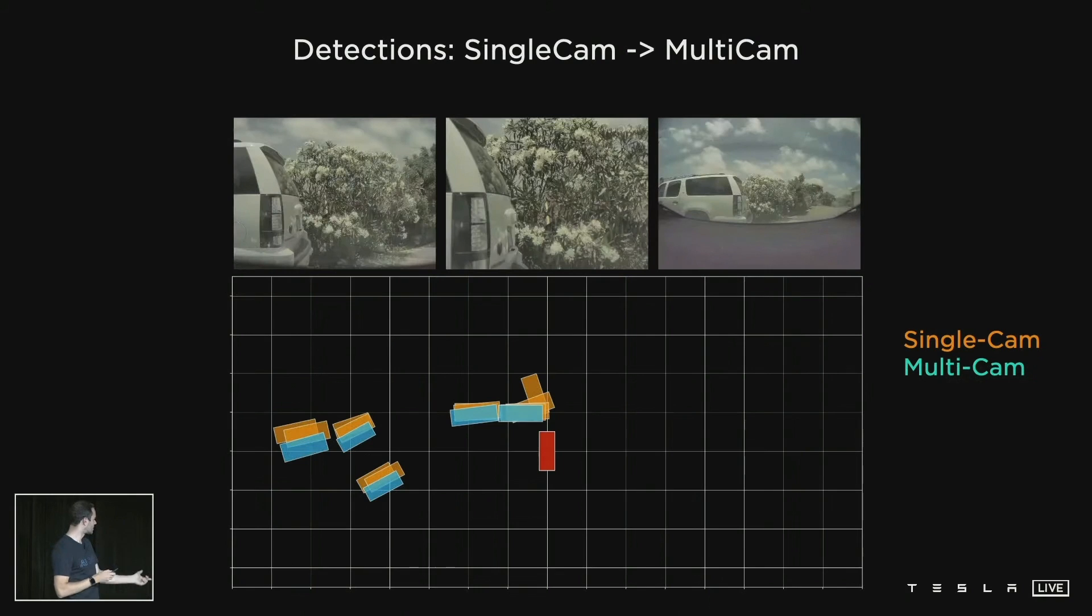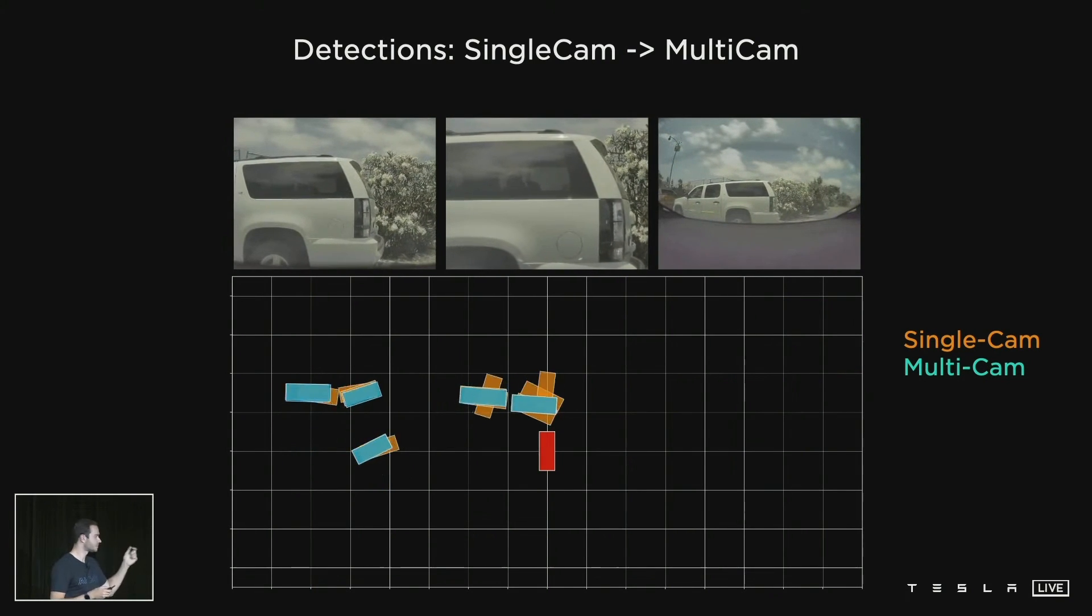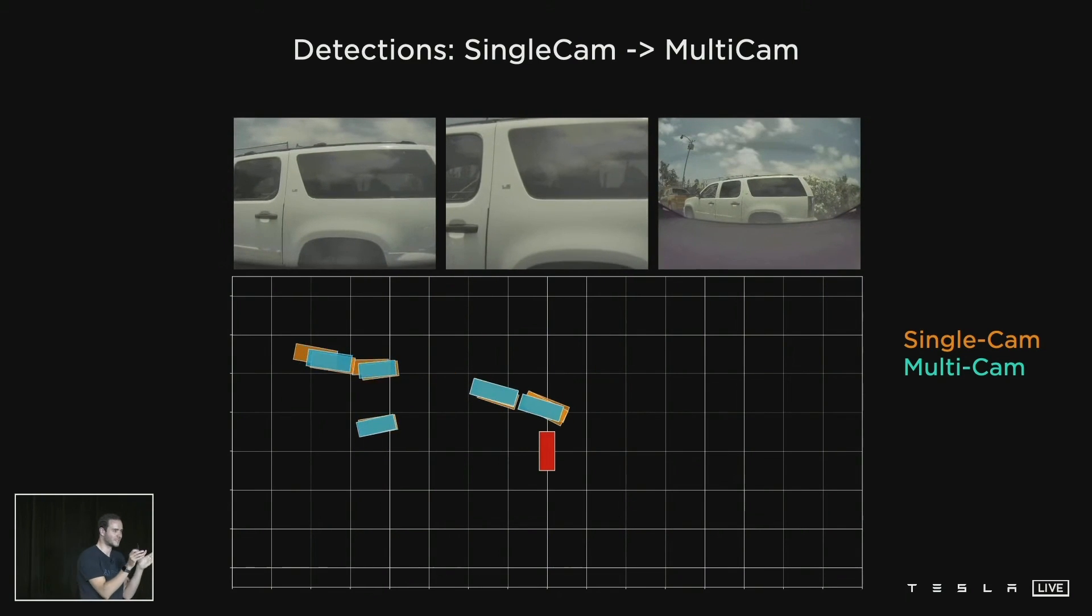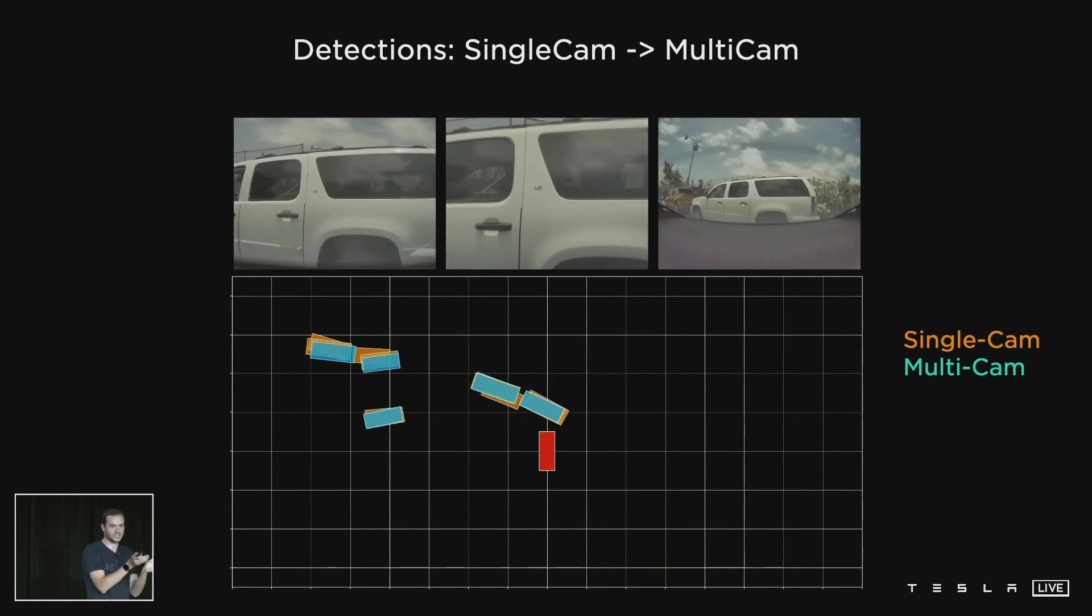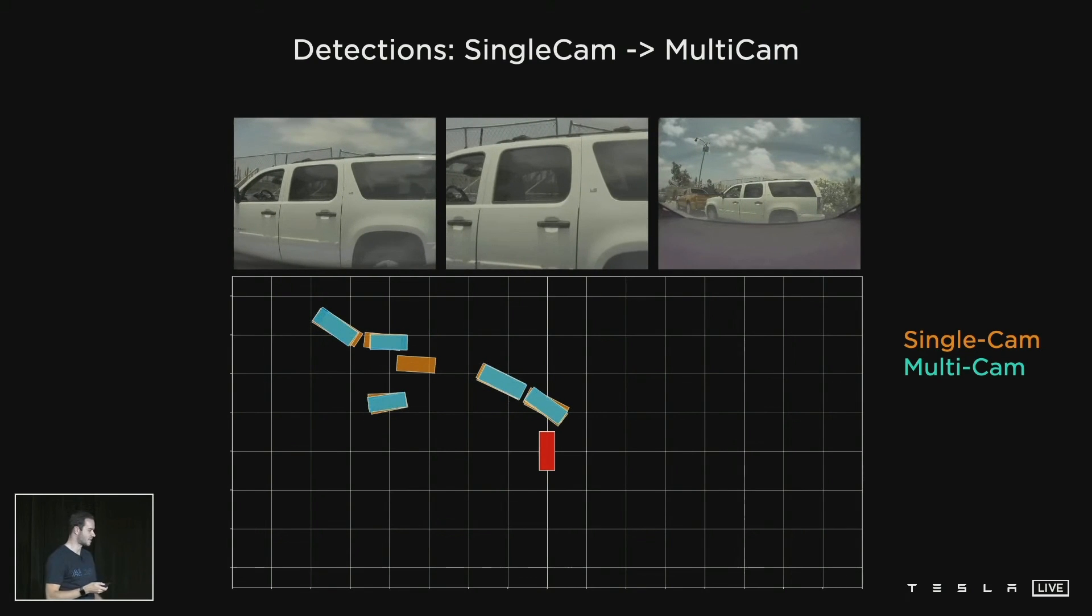For example, in this video I'm showing single camera predictions in orange and multi-camera predictions in blue. If you're only seeing a tiny sliver of a car, your detections are not going to be very good and their positions are not going to be good. But a multi-camera network does not have an issue.